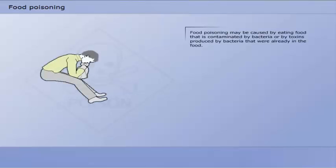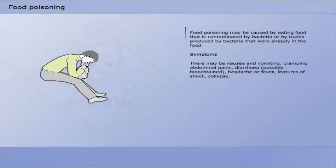Food poisoning may be caused by eating food that is contaminated by bacteria, or by toxins produced by bacteria that were already in the food. Symptoms of food poisoning may include nausea and vomiting, cramping abdominal pains, headache or fever, features of shock, and collapse.